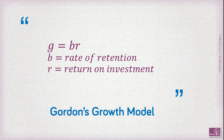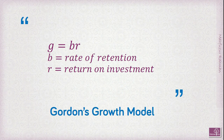We also need to learn Gordon's growth model, where g equals b times r. Here g is the rate of growth and b is the rate of retention. For example, if a company earns $100 profit and pays a dividend of $30, retaining $70, then the rate of retention is 70%. And r is the return on investment — the percentage rate of return that an entity is capable of earning on its new investment.